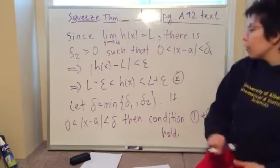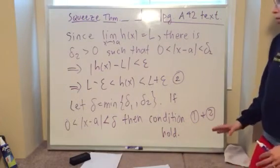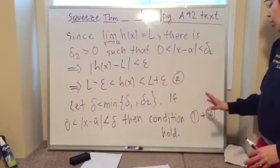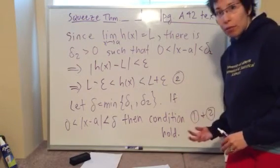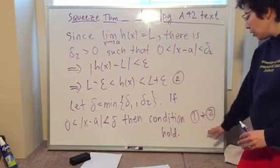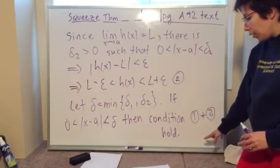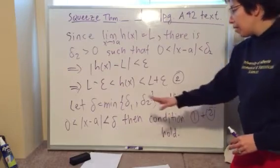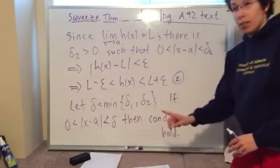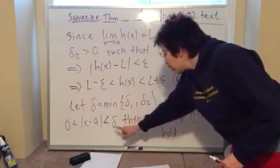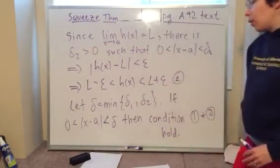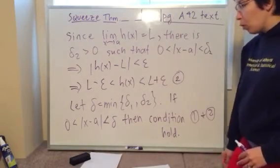condition one and two are going to hold. And, I'm glad you're going to read it, because this is a good point for you to continue on your own if you can. How do you use condition one and two to derive information about g, basically? So, we have x minus A less than delta, which means it is less than delta one and it is less than delta two, by the way that we designed delta. What could you conclude?